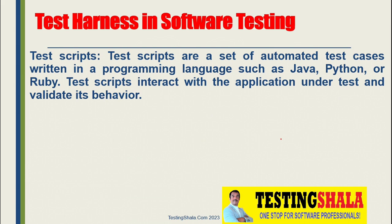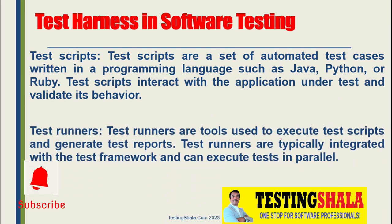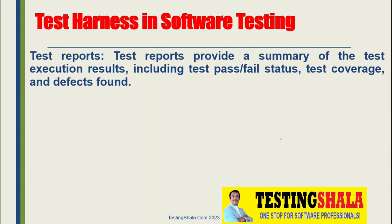The next component is the test runner. Test runners are tools used to execute your test scripts and generate test reports. They are typically integrated with your test framework and can execute tests in parallel. Once tests are run, test reports provide a summary of test execution, including pass or fail status, test coverage, and defects found.